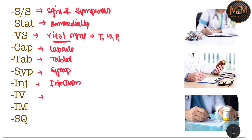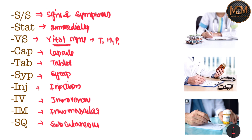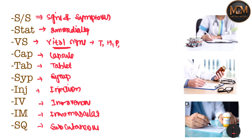IV means intravenous — the drug or medication must be given through the intravenous pathway. IM means intramuscular — the drug is given into the muscle. SQ means subcutaneous — the drug is given under the skin.